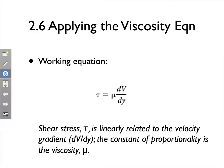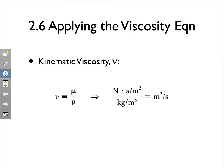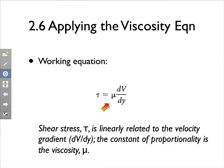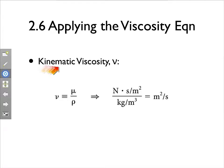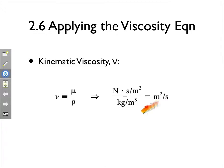This is our working equation for viscosity. The other important equation is that mu is called the dynamic viscosity. We also have a definition of what's called the kinematic viscosity, nu, which is defined as mu over the density. The units of mu are Newton seconds over meters squared, and when we divide by kilograms over meters cubed and reduce the units, we get meters squared over seconds for kinematic viscosity.